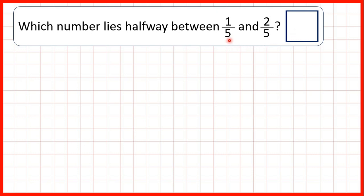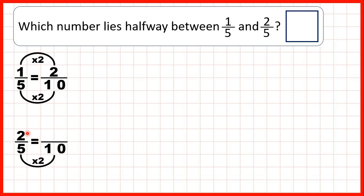But what we can do is find equivalent fractions for both one-fifth and two-fifths. The next multiple of five is ten, so we can change one-fifth and two-fifths into tenths. Five times two is ten, one times two is two, five times two is ten, two times two is four.